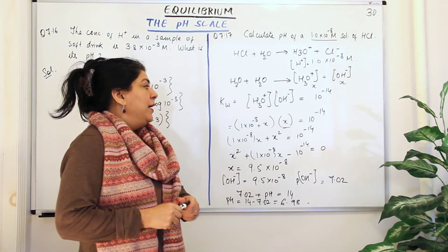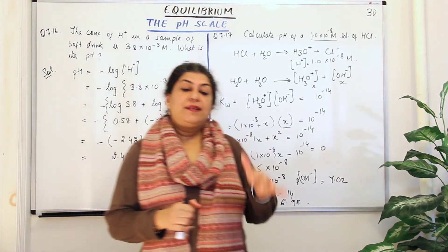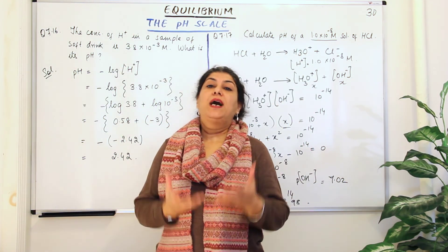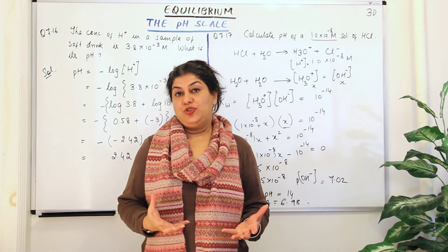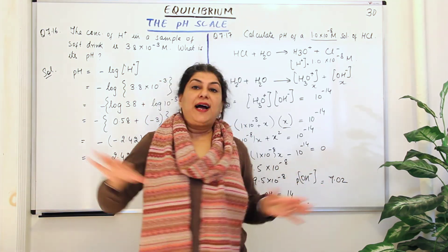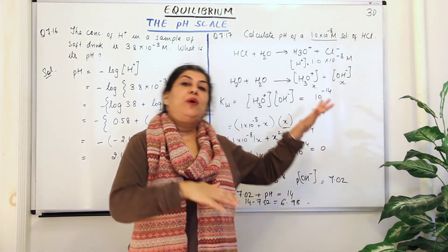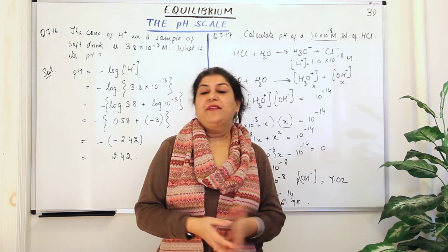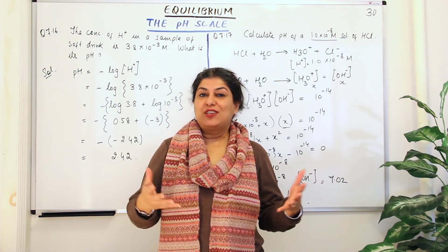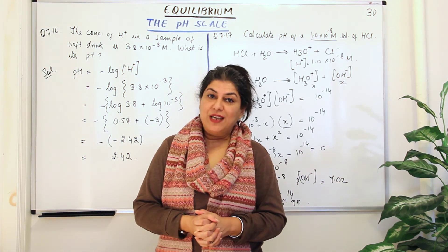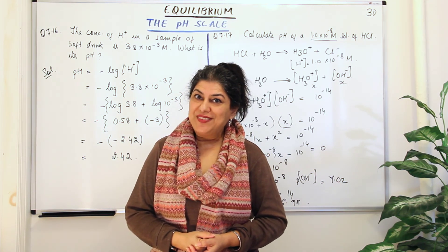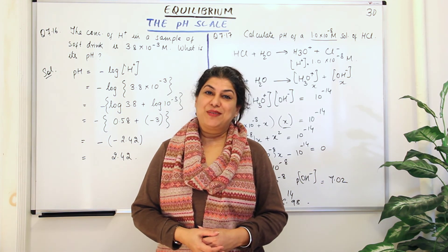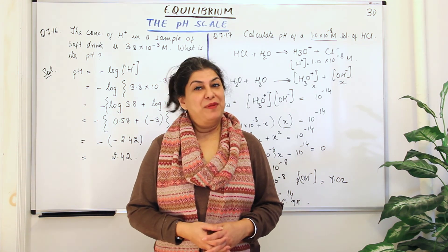So basically, in order to find the pH of a solution, you must know the hydrogen ion concentration. That concentration is either directly given to you, or you have to calculate it first and then arrive at your answer. That's all for today's video. If you found it helpful, please give it a thumbs up, subscribe to my channel, recommend it to your friends, and keep returning for more chemistry videos. Thank you for watching, bye-bye for now.